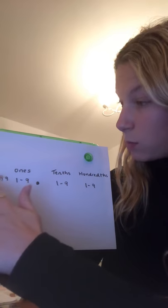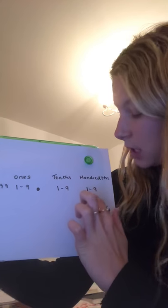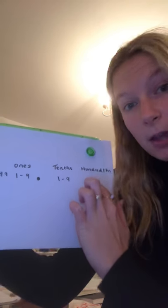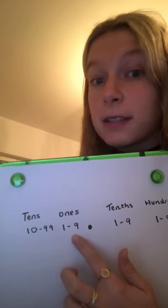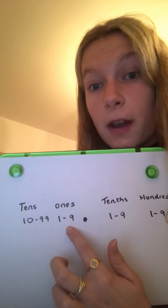On the right-hand side of the decimal point, we have our tenths and hundredths. These work in the same way, moving from right to left. The hundredths get up to nine, then they qualify to tenths. Once they're at the tenths, they then qualify past the decimal point to the ones, where they qualify past to the tens, and so on and so forth.